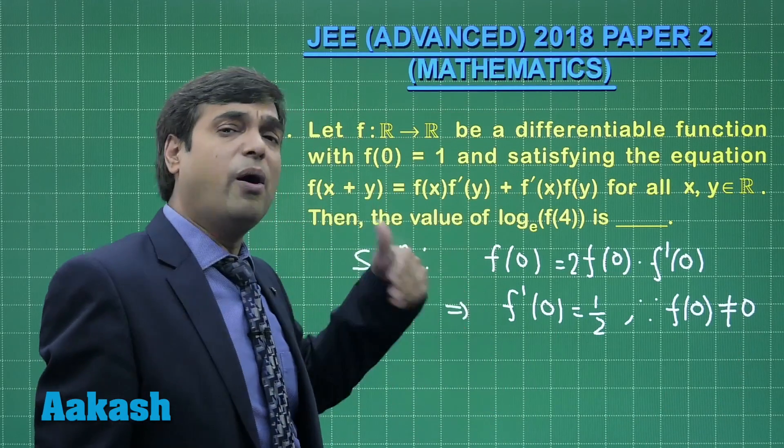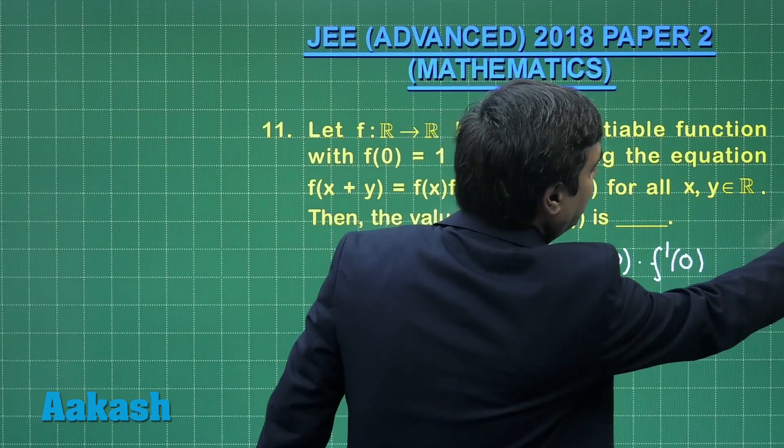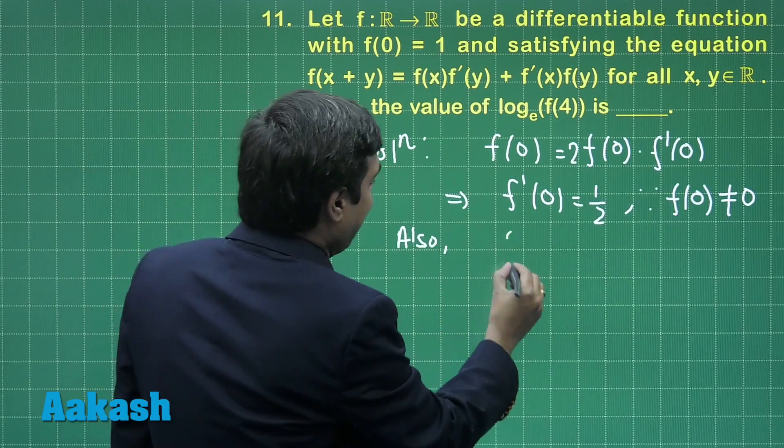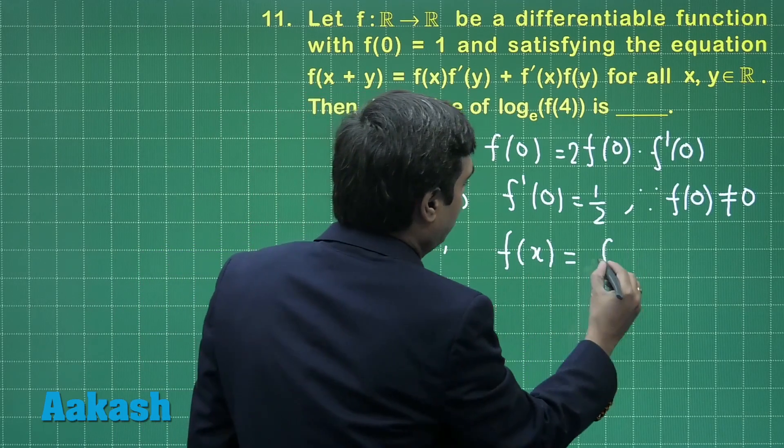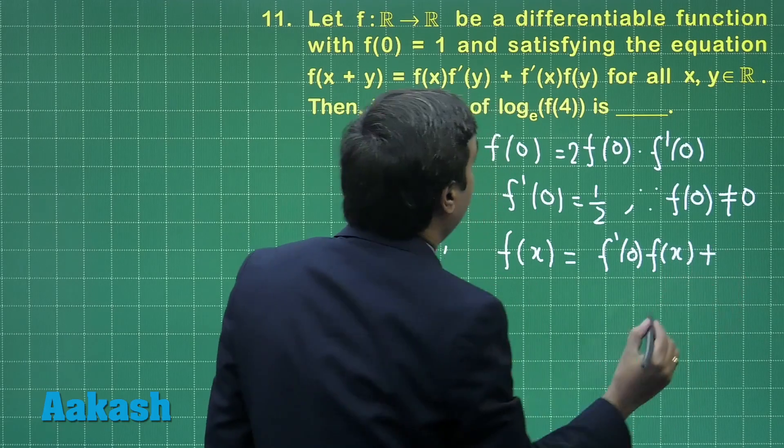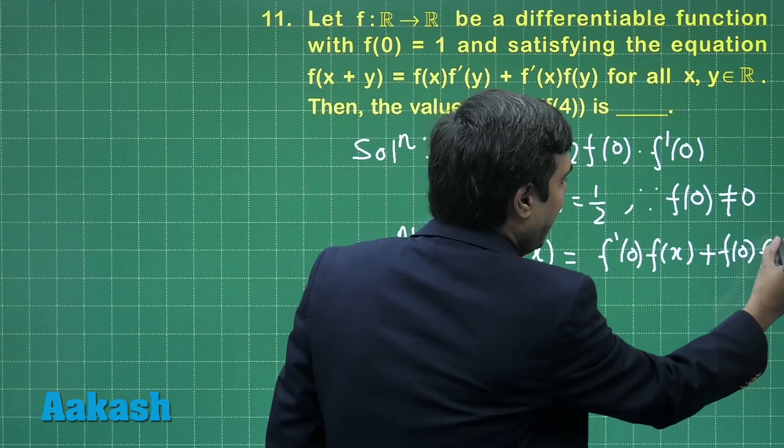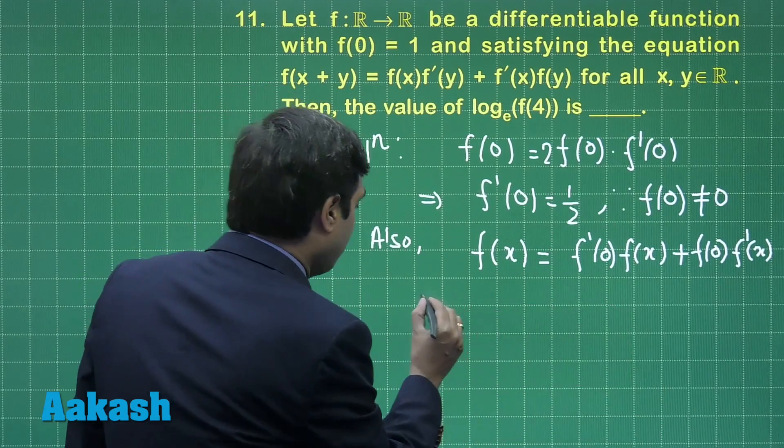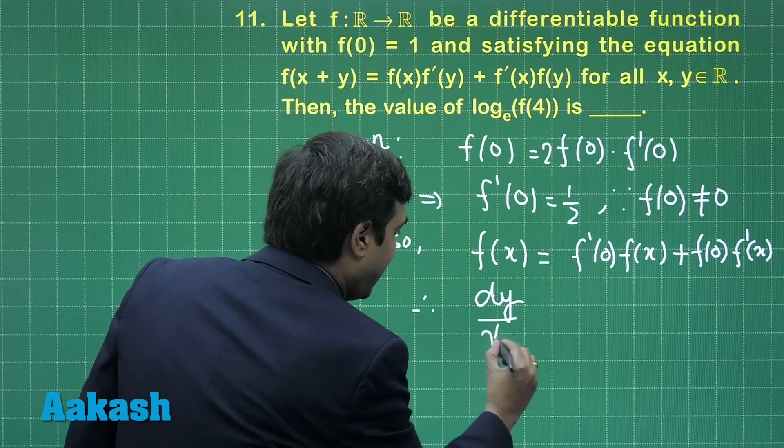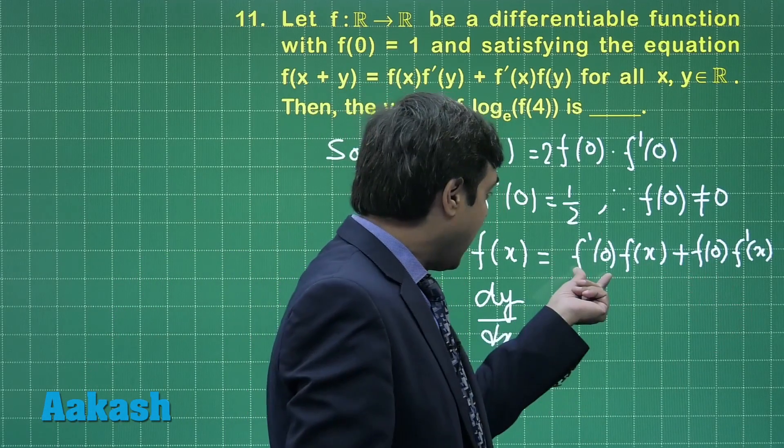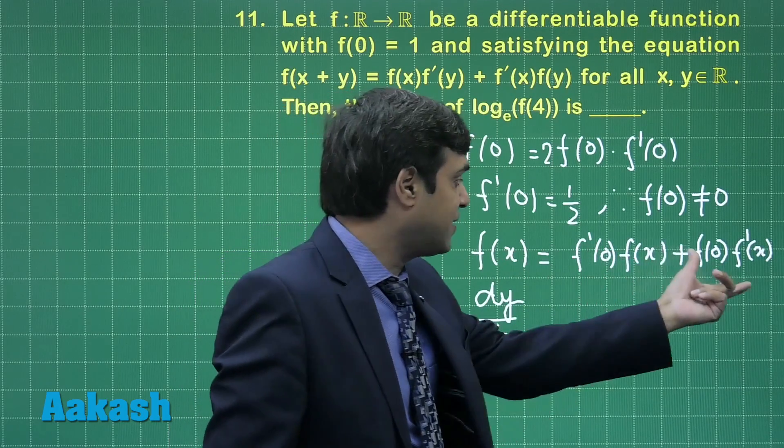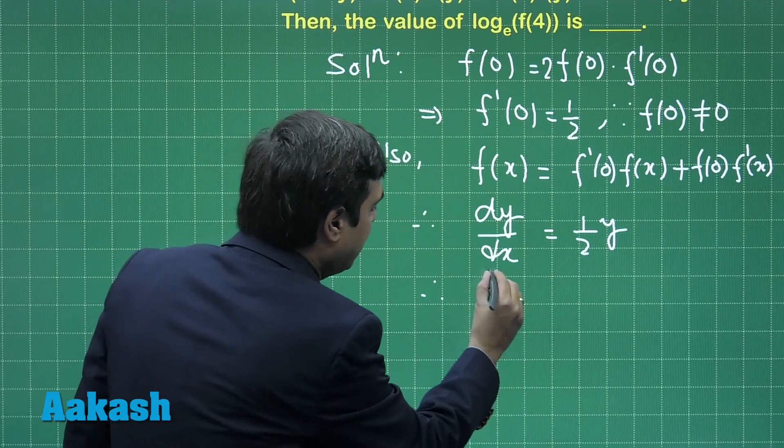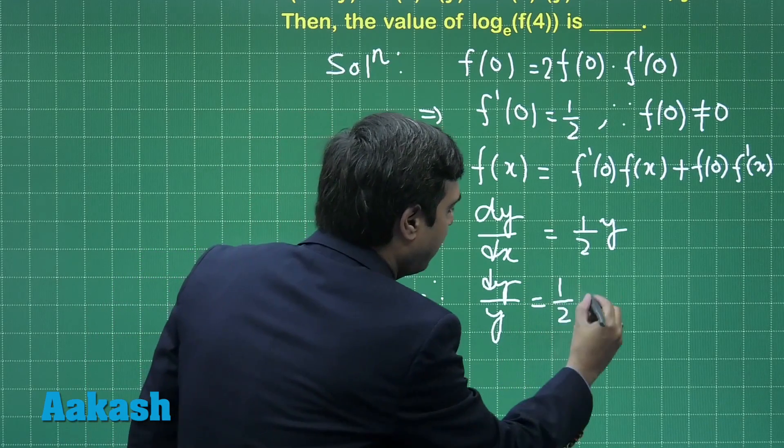Now put y equals 0 in the given equation. We are getting f(x) equals f'(0)f(x) plus f(0) into f'(x). Let us write f(x) as y to get differential equation form. We have dy/dx as f(0) is 1, f'(0) is 1/2, so f'(x) equals (1/2)f(x) plus f'(x), meaning dy/y equals (1/2)dx.